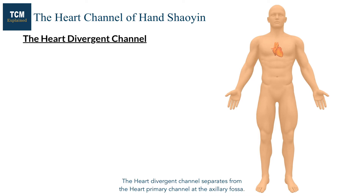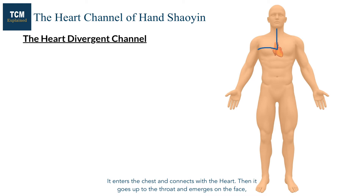The heart divergent channel separates from the heart primary channel at the axillary fossa. It enters the chest and connects with the heart. Then it goes up to the throat and emerges on the face, connecting with the small intestine channel at the inner canthus.